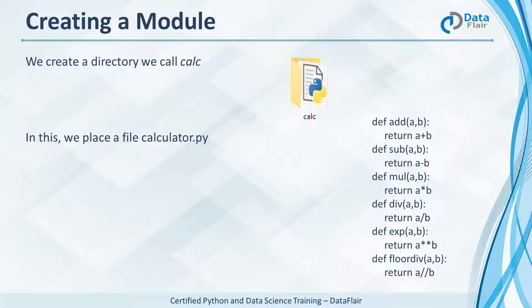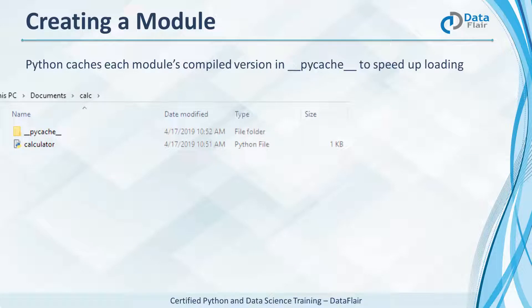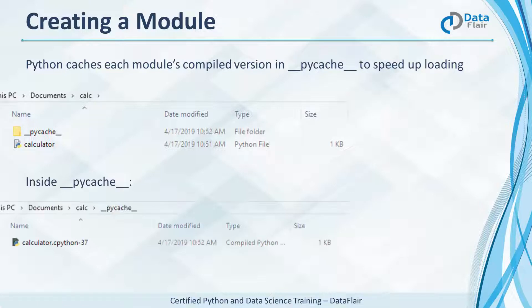It is a calculator that performs six different operations. So which one is the module here? Both calc and calculator — a module can hold another. Let's get to the explorer to see how this looks. Python compiles each module and caches it in a __pycache__ folder so it loads fast when you import it in the interpreter or in code. Inside this, you can see that it holds a compiled Python file.